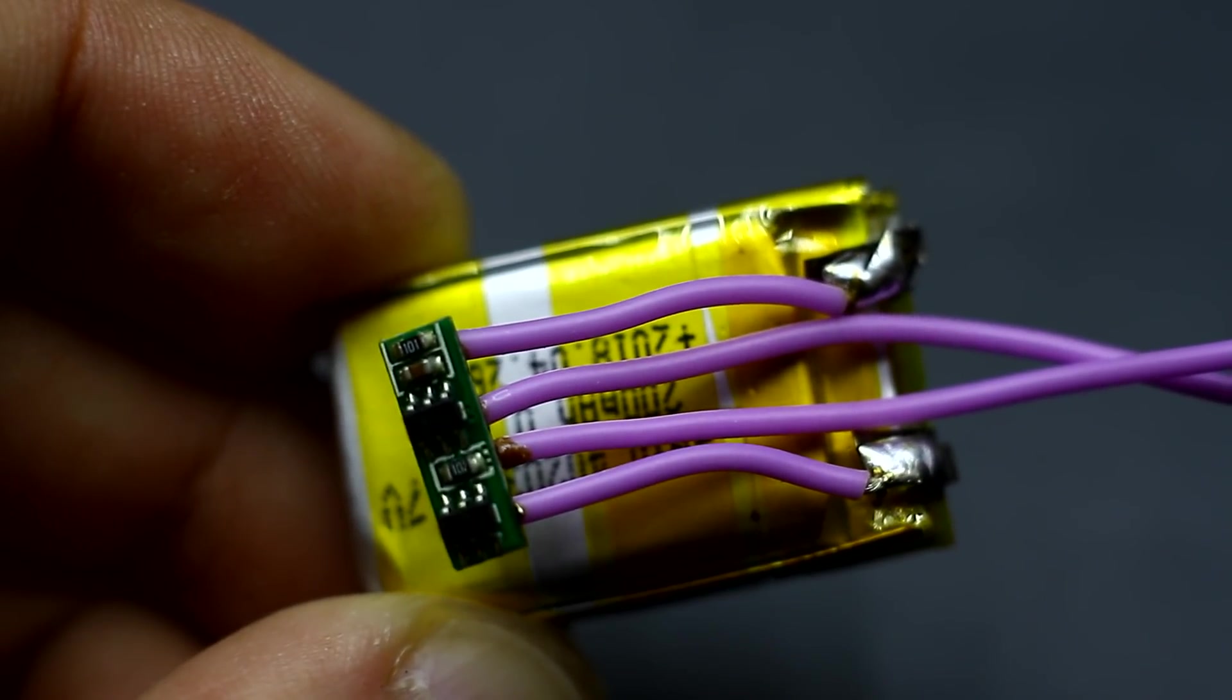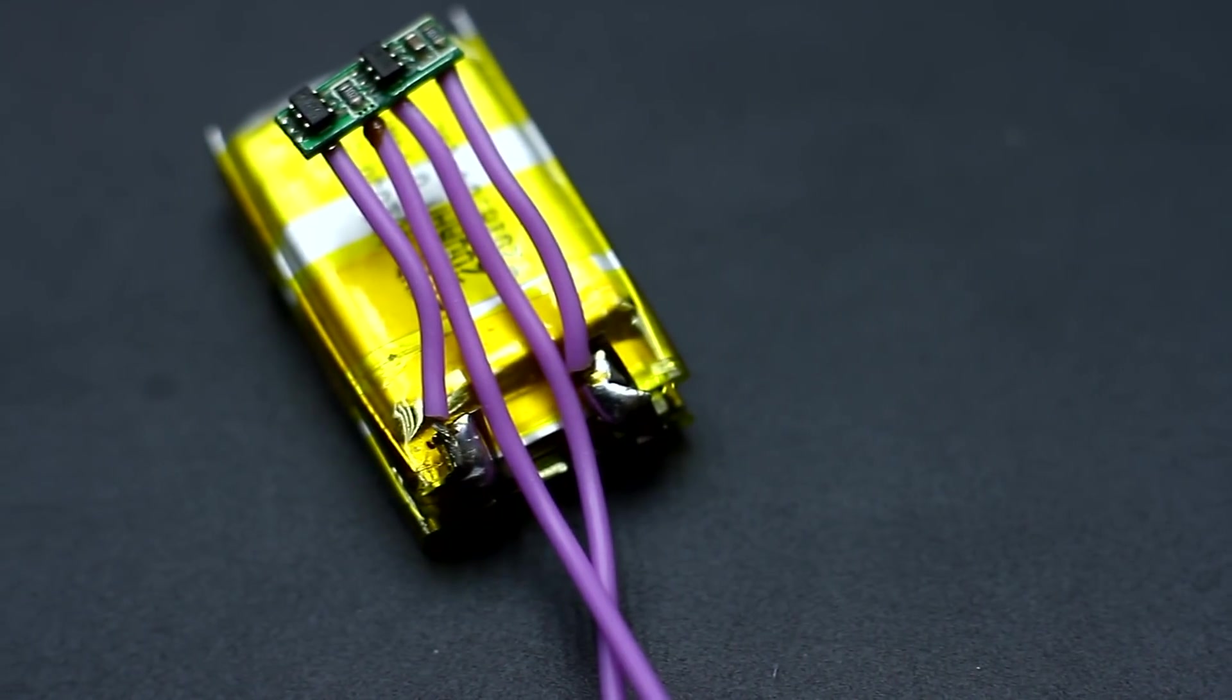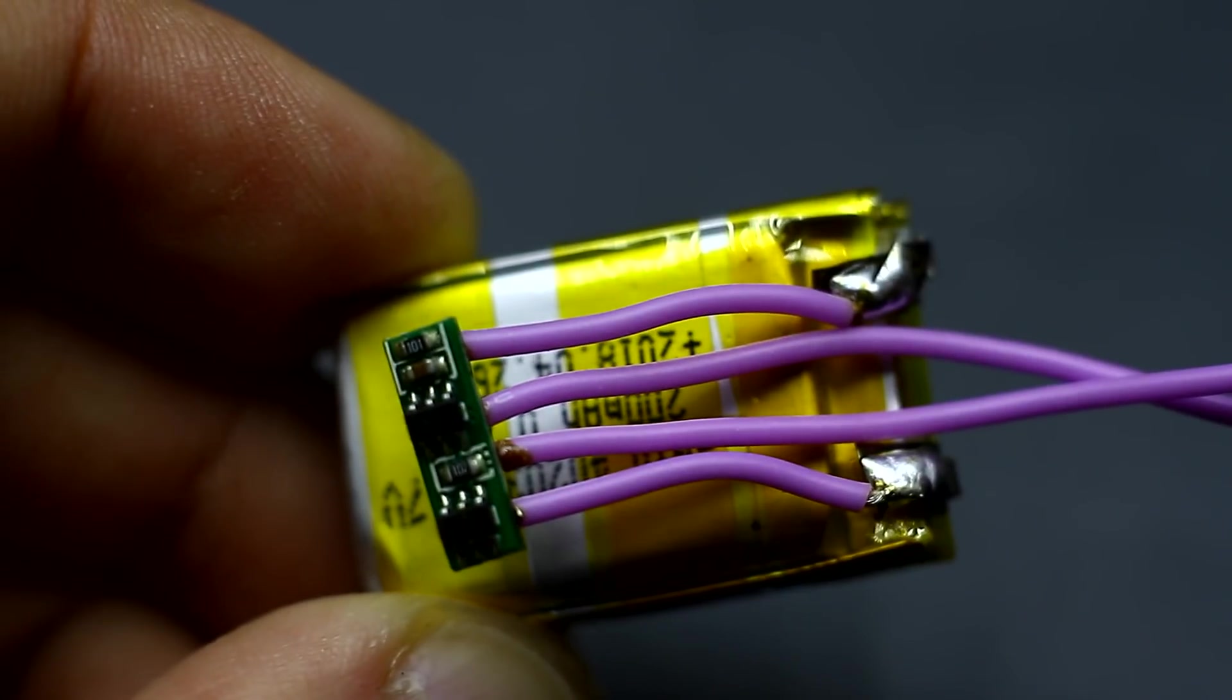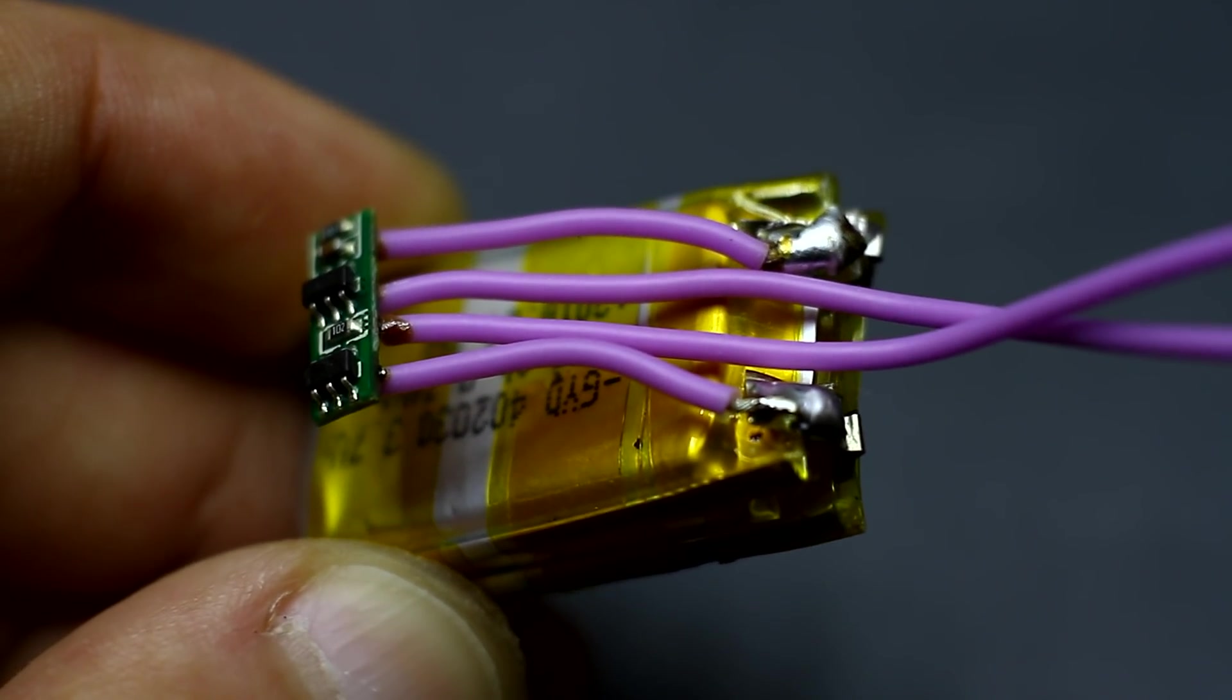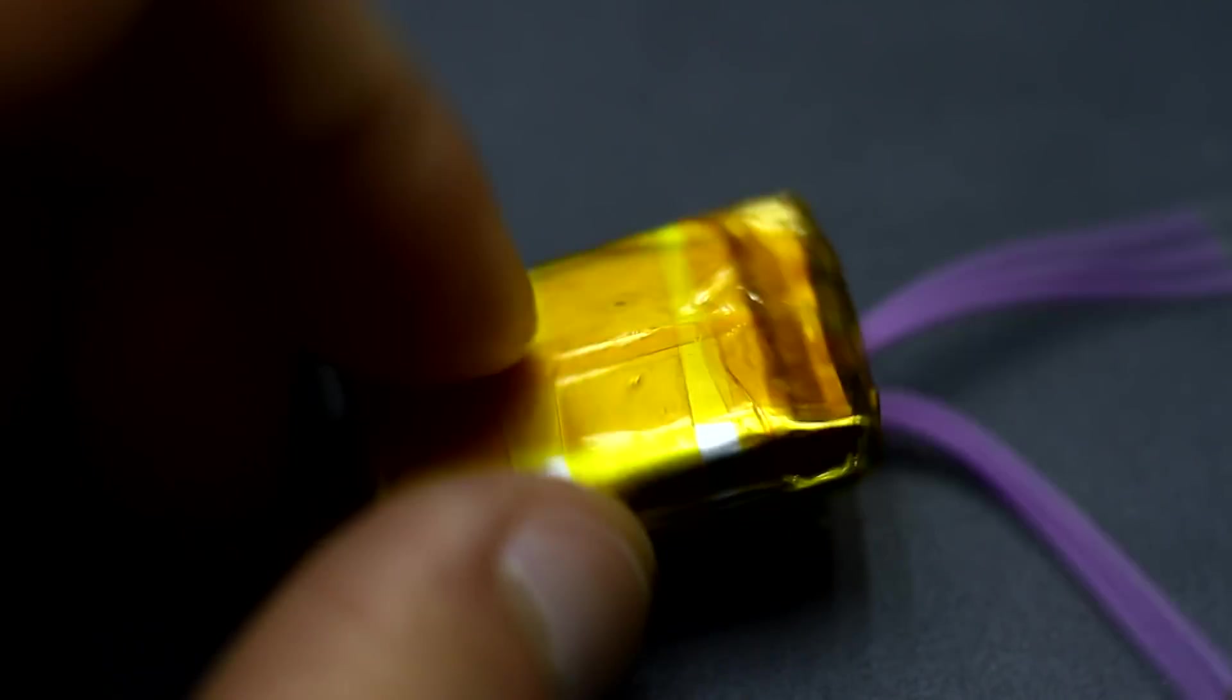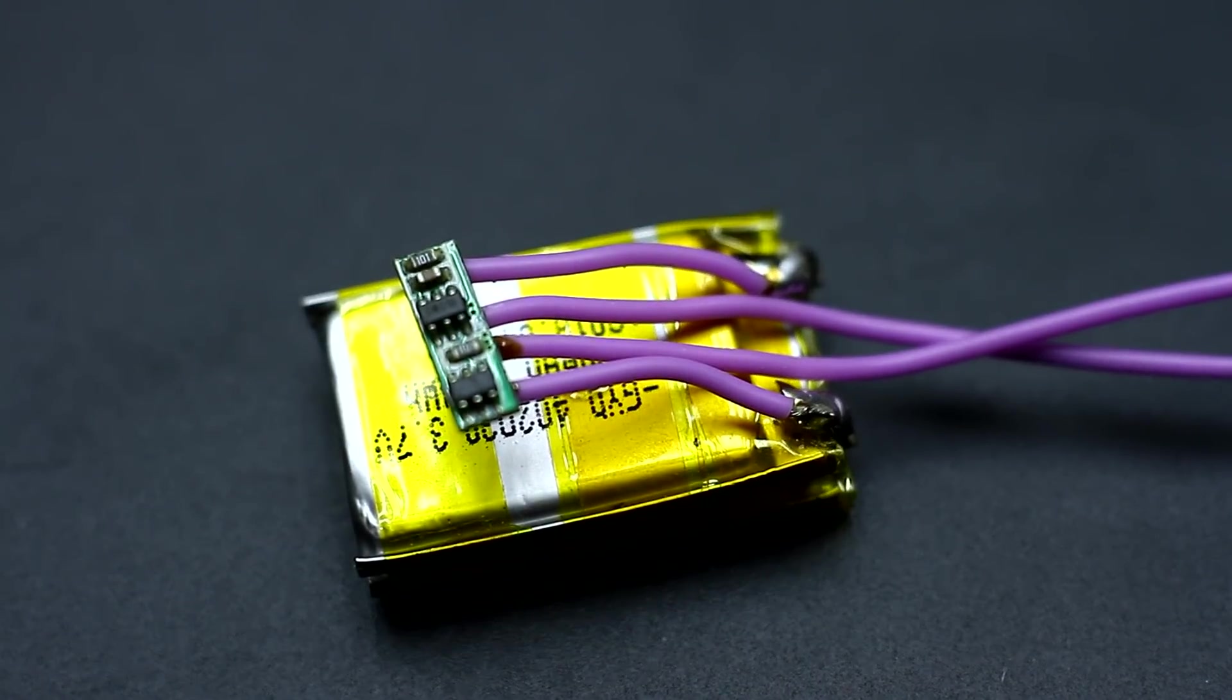I removed the control boards from the batteries, connected them in parallel, and connected the finished assembly of two batteries to the board. This board provides protection against short circuits, deep discharge and overcharge. For this board, the protection actuation current is within 1.8 Ah. As a result, we have a 3.7 Volt battery with a capacity of about 400 mAh. In theory, this should be enough for 15 minutes of continuous operation of the lighter.